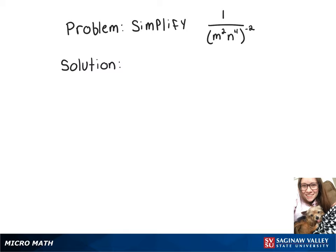It's simpler with this expression. We're going to take each of those exponents being raised to the negative second power and multiply them by negative 2. So we have 1 over m to the negative 4 times n to the negative 8. Then since we have negative exponents, they can go to the other side of the fraction, giving us our final answer: m to the 4th times n to the 8th.